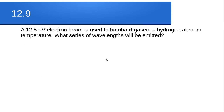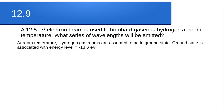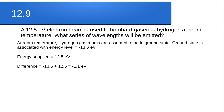Question 12.9: a 12.5 eV electron beam is used to bombard gaseous hydrogen at room temperature. What series of wavelengths will be emitted? At room temperature, hydrogen gas is assumed to be in the ground state with energy −13.6 eV. The energy supplied is 12.5 eV, and the difference between the ground state energy and the supplied energy is about −1.1 eV.